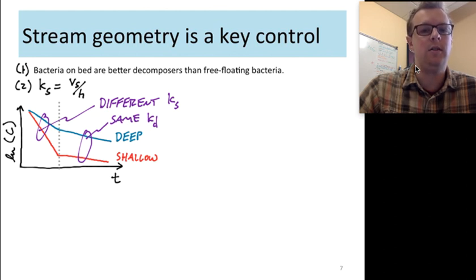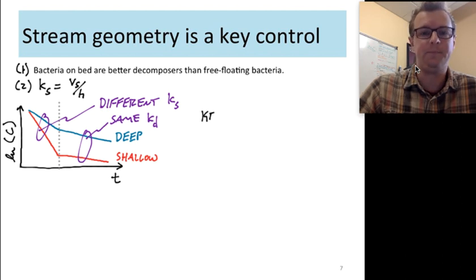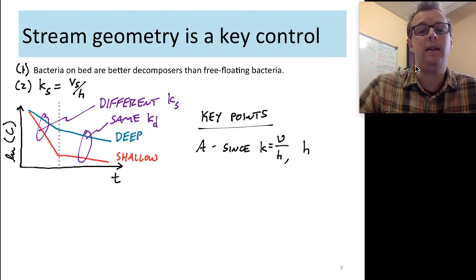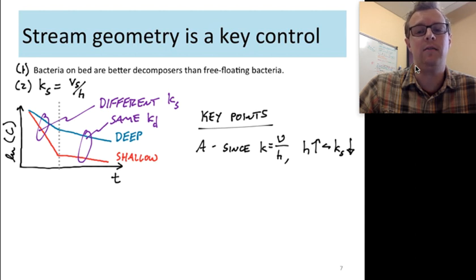Where in that first segment, where both settling and decomposition occur, we've got different slopes because there are different effective settling velocities. That's because of different KS values, so removal rates due to settling. And that's not because settling velocity has changed. That's because the depth has changed. When we look out to the right-hand side of that gray line, deep and shallow systems both have the same KD, so the same decomposition rate. So key points to keep in mind as you think about reaction rates or removal rates for BOD. One is that since settling has a function of depth, the depth of your system is inversely related to settling rate. Or as depth goes up, removal due to settling slows down.